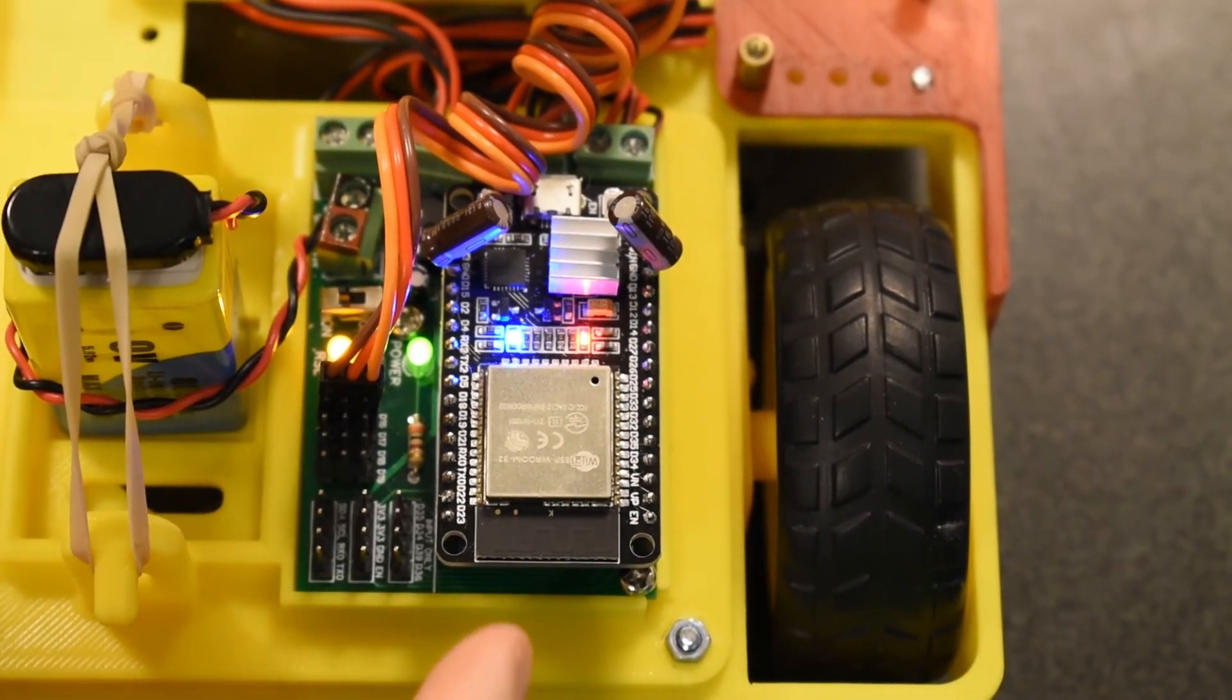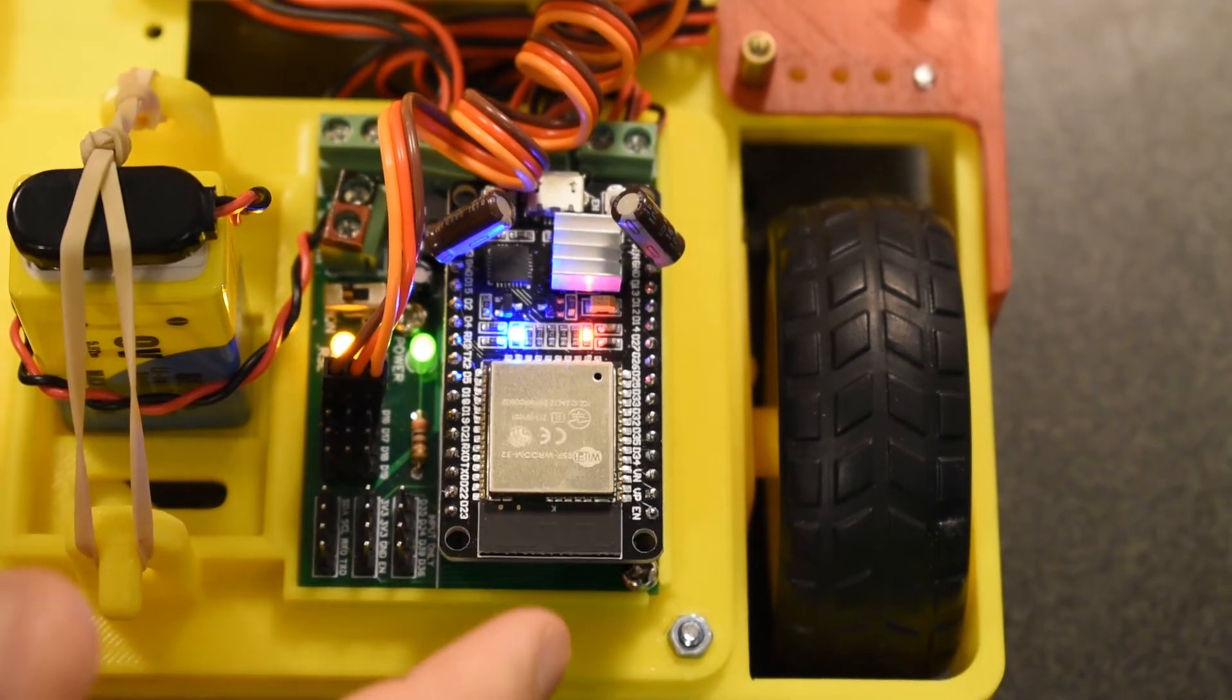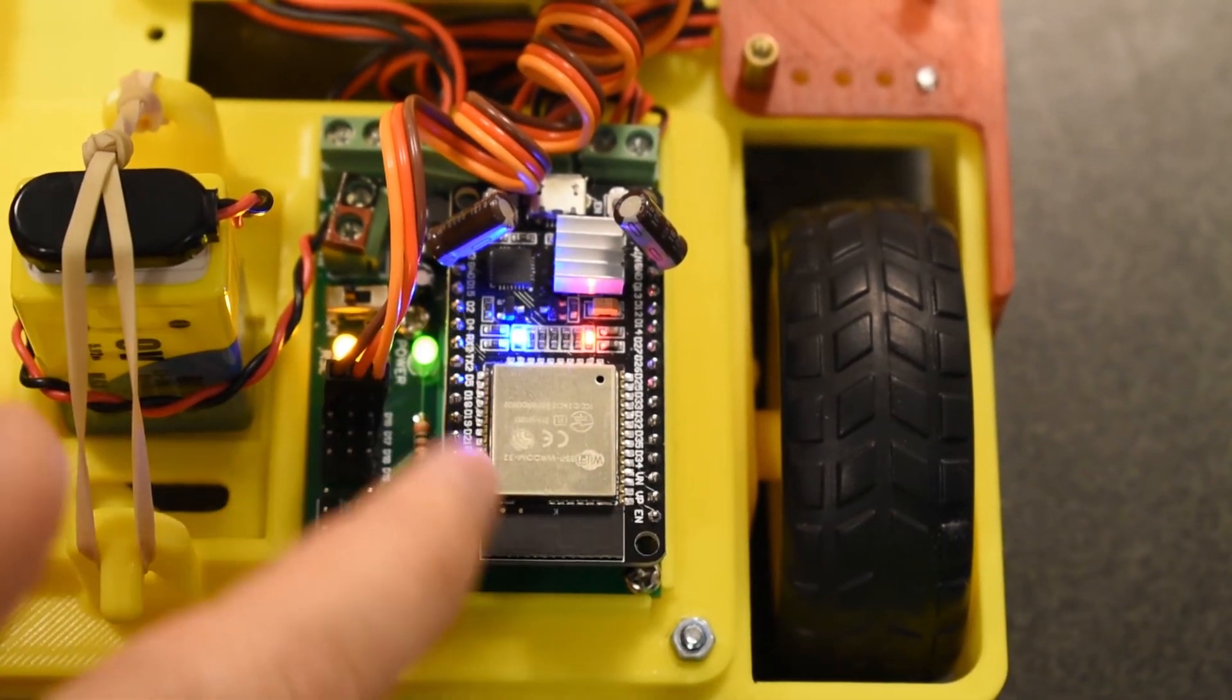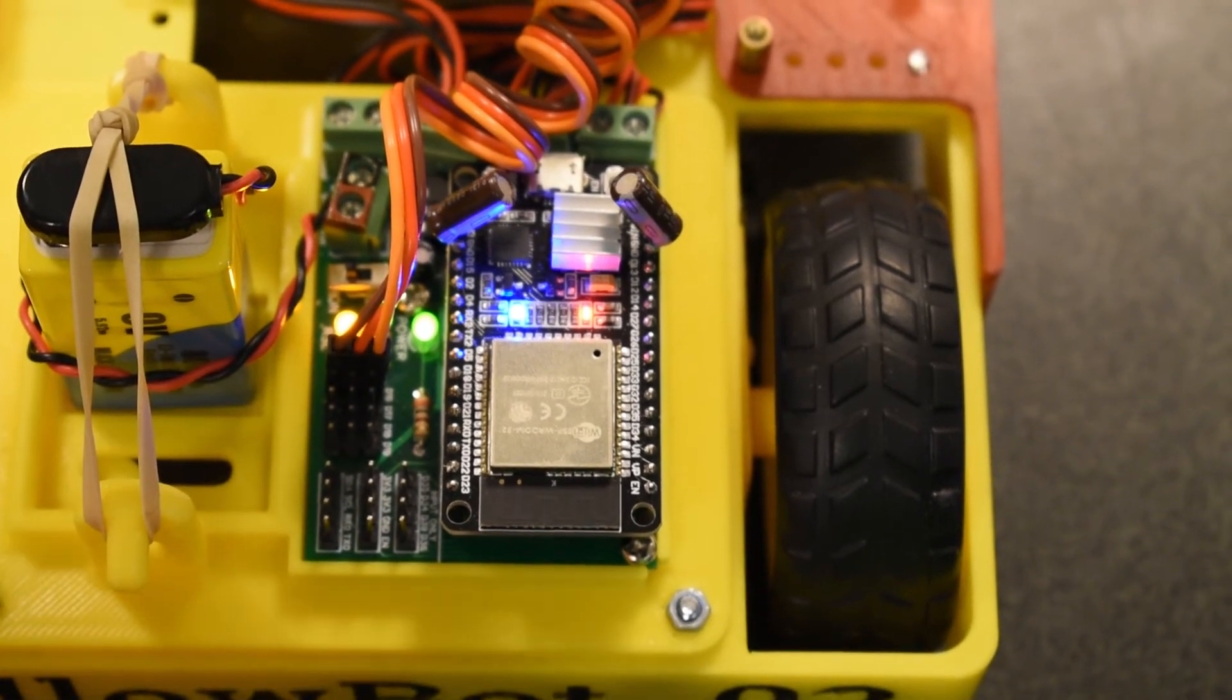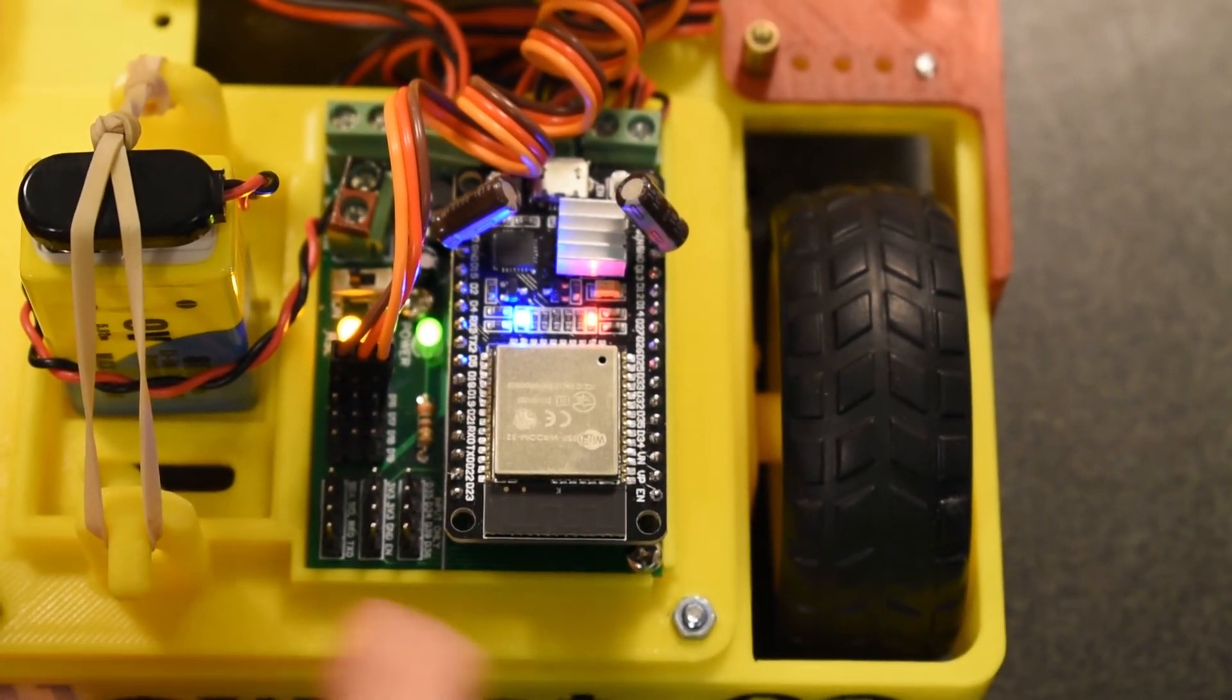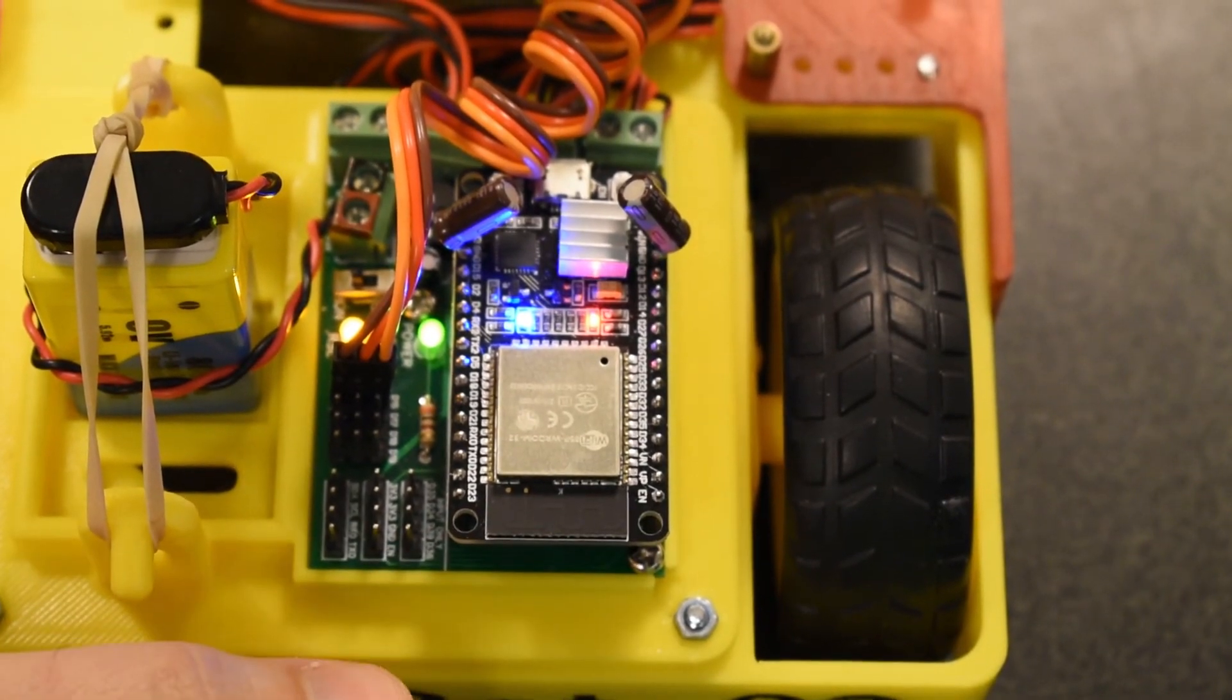In terms of communication to drive the robot, we're using a digital module in the form of this ESP32 microcontroller and its connection to the motor controllers down here. This module allows for Bluetooth and Wi-Fi communication. We'll be using Bluetooth to control this robot.